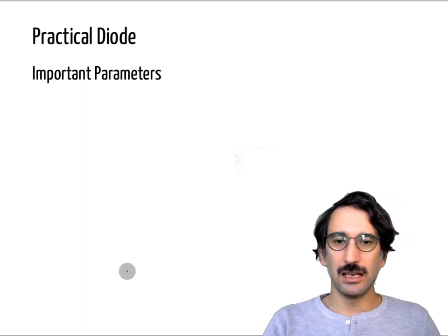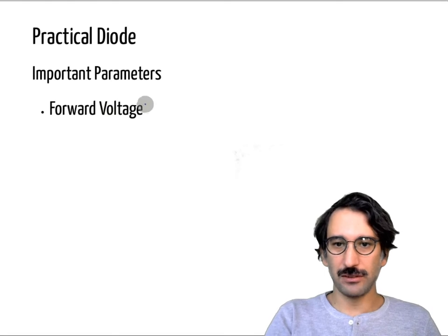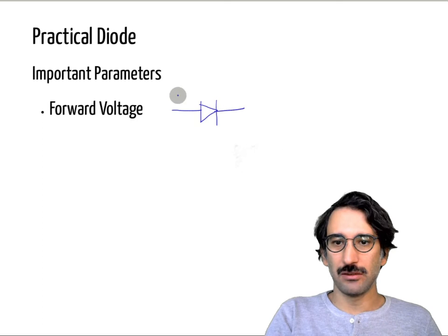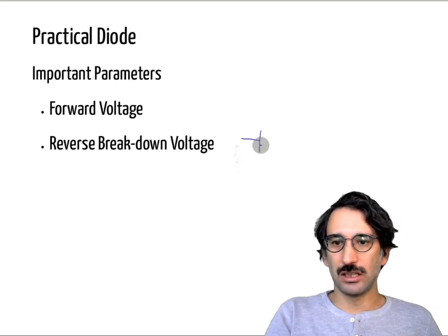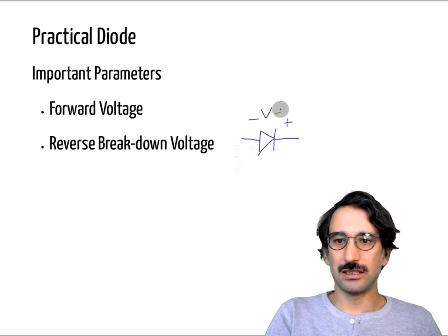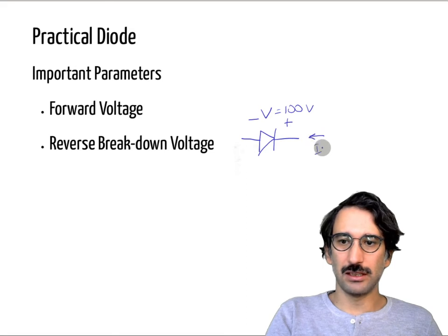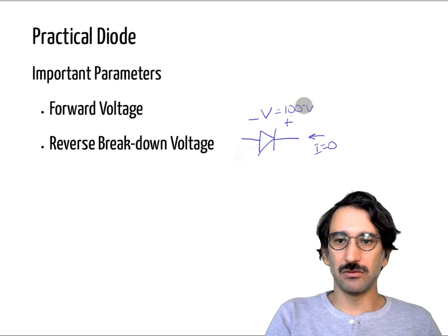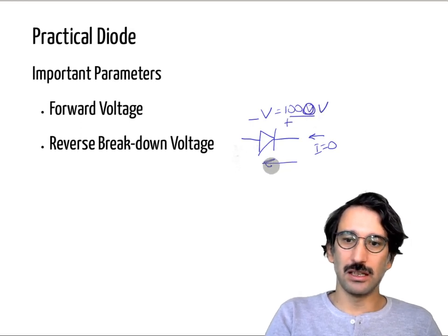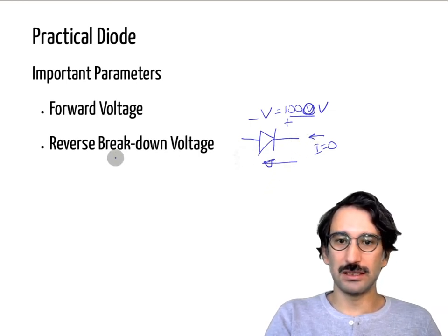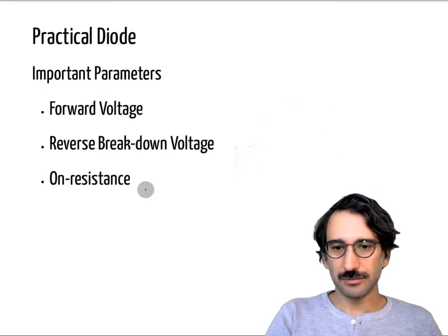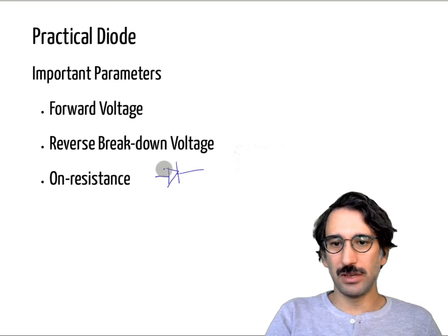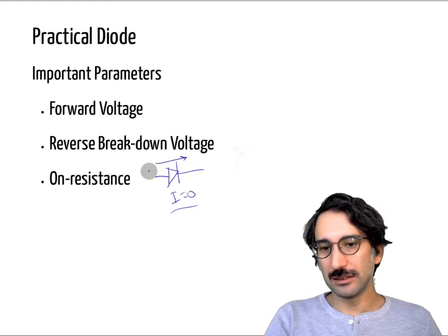Let's define a couple of important parameters for a practical diode. First, the forward voltage — when the diode is carrying current it will have some voltage drop, and that is called the forward voltage. Then we have the reverse breakdown voltage — if you apply a large enough negative voltage, it can damage the diode and cause it to start conducting. That is the maximum voltage level you can hold without damage.